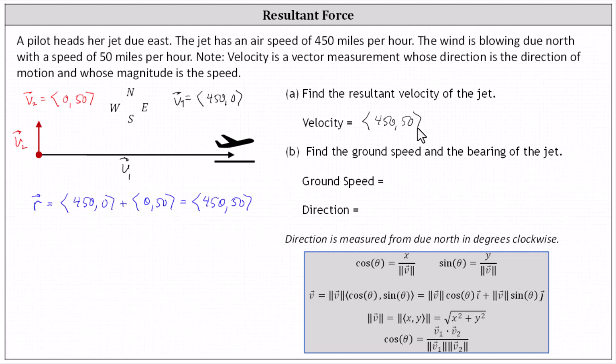Before we determine the ground speed by determining the magnitude of the resultant vector, let's show the sum of these two vectors graphically. One way to add the vectors is to move vector v sub two so the initial point is at the terminal point of vector v sub one, which would look like this. The resultant vector r is the vector formed from the initial point of vector v sub one to the new terminal point of vector v sub two, which is this vector here. This is the resultant vector that we just found.